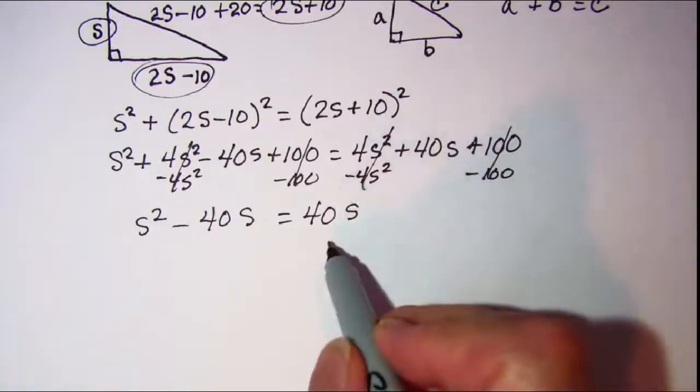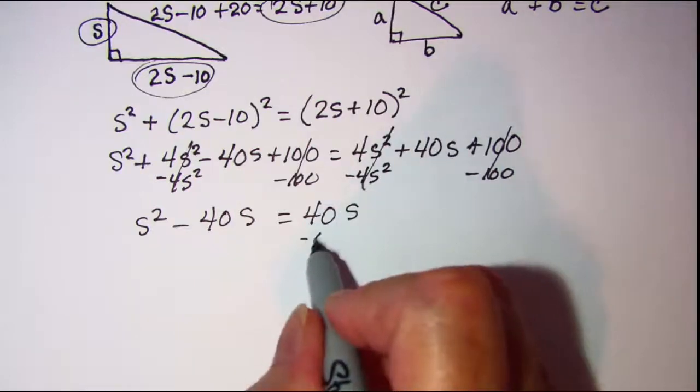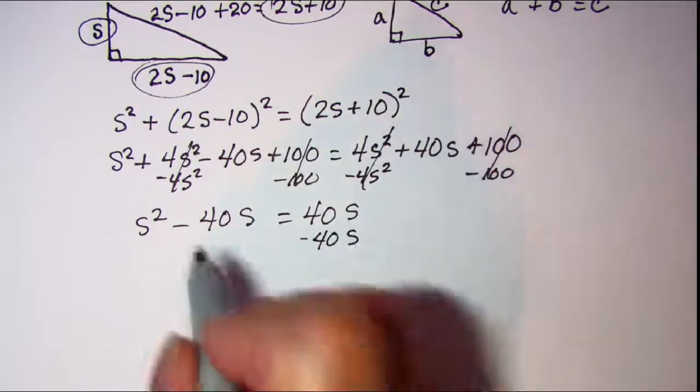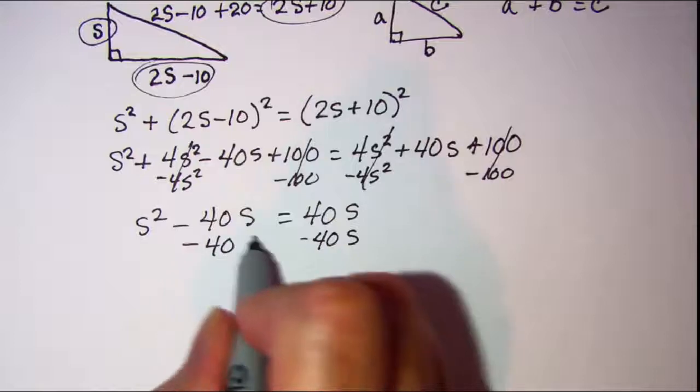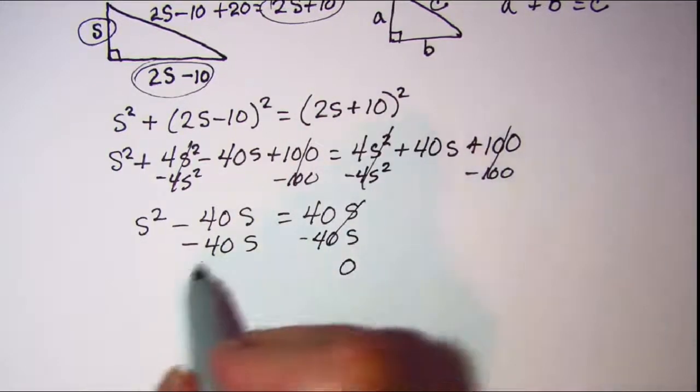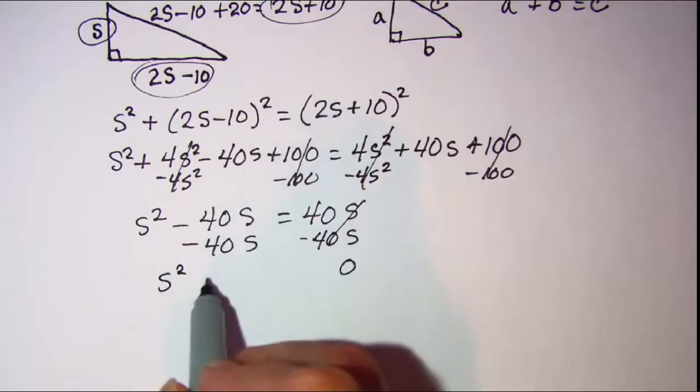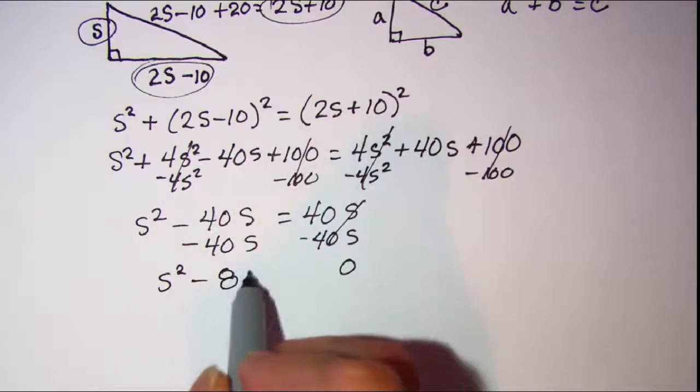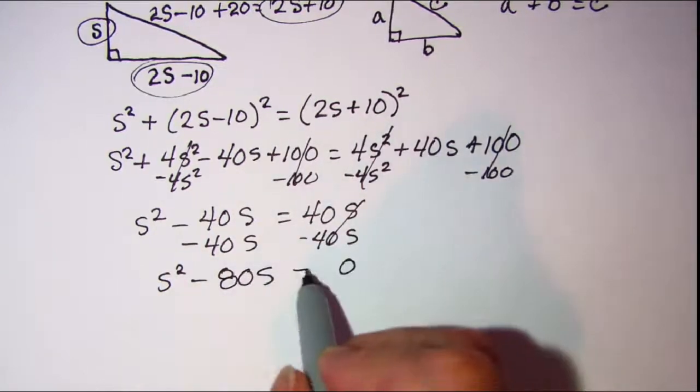I'm going to get a zero on the right side, so I'll subtract 40s from both sides. This goes away, and I have zero on the right side, and s squared minus 80s is equal to zero.